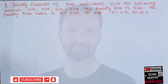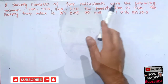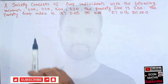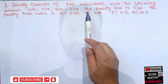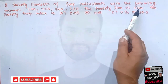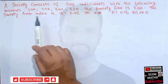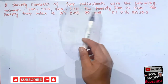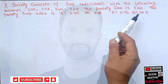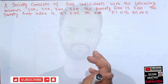Hi, this is Halal. In this video we will learn about the poverty gap index with an example. A society consists of four individuals with incomes of 200, 220, 300, and 320. The poverty line is 250. The answer choices for the poverty gap index are 0.05, 0.08, 0.16, or 20.0. We will see how to solve this question.